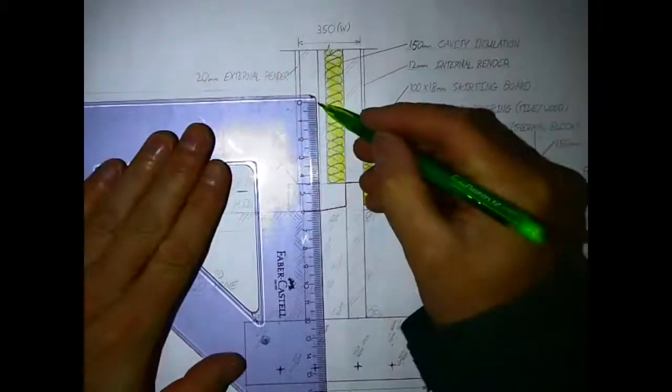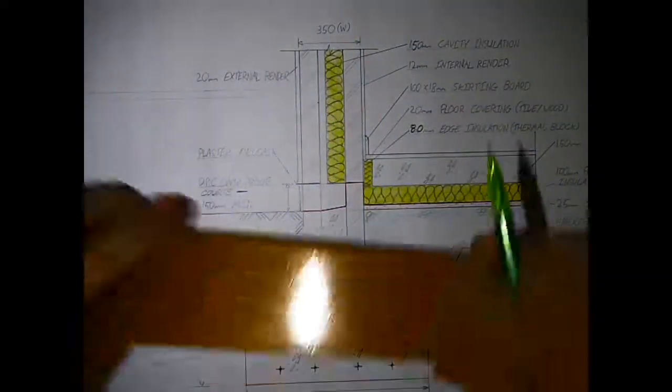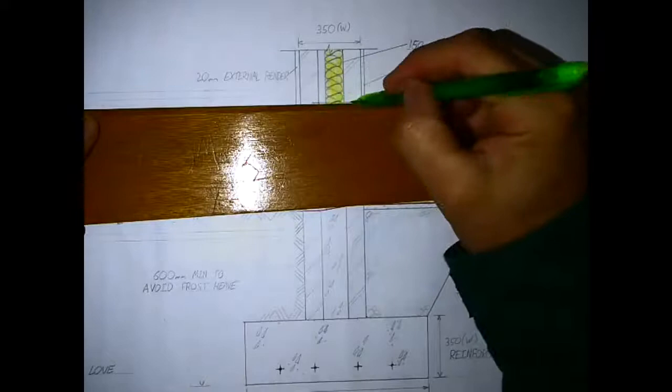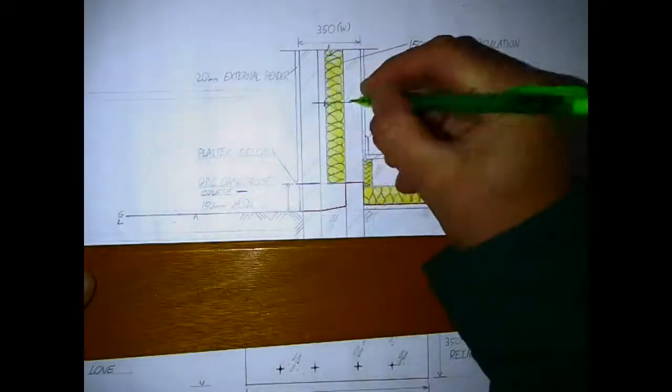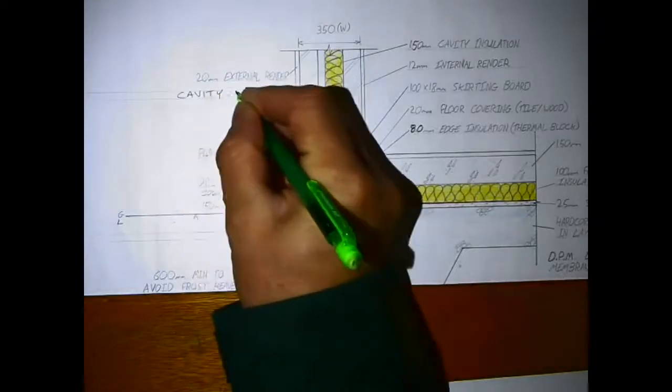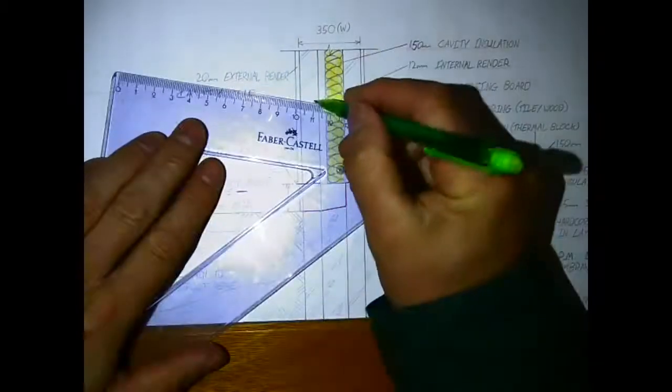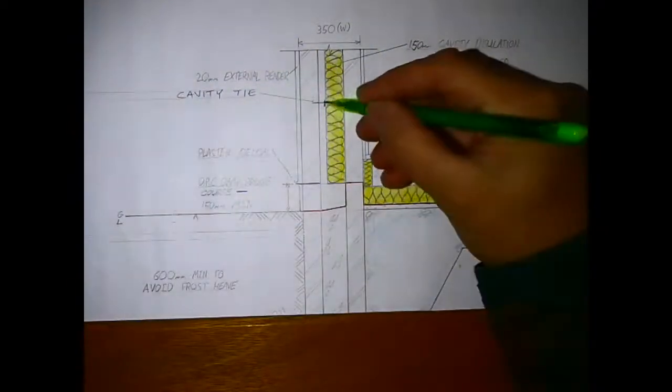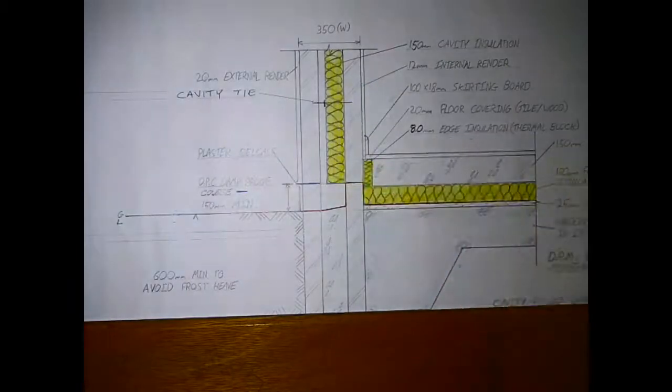The first tie would be at the very bottom. I'm not drawing it in heavy on purpose because I don't want it to take away from the DPC which is colored in blue and the DPM in red. Instead I'm drawing the first cavity tie at 450 millimeters, so quite easy to include in there.